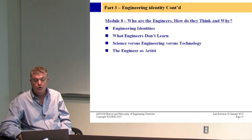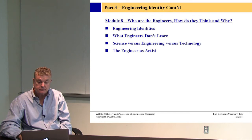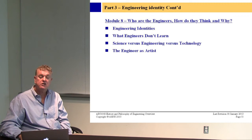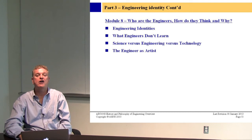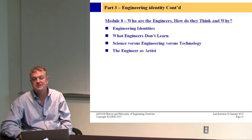Module eight, slide eleven: who are engineers and how do they think and why? There are lots of books and academic papers written by American philosophers of engineering and historians looking at the identities of various engineers in society, what engineers learn and don't learn, and what the differences are between science, technology, and engineering. We'll also talk about the engineer as artist — Leonardo da Vinci is claimed by artists, architects, and engineers alike, but of course he was all of them. He was a polymath and a great painter.